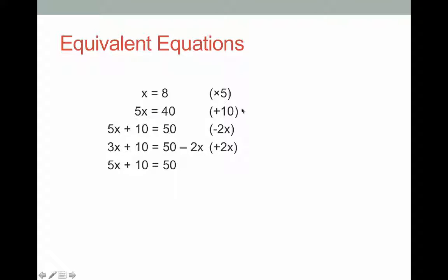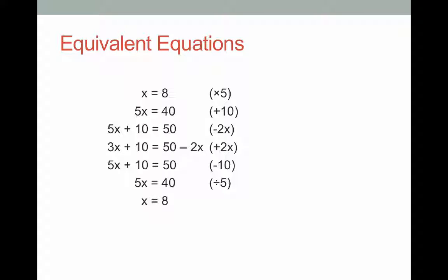Next up, I'm going to do the opposite of plus 10, which is to minus 10. So now I'm going to minus 10 from the left-hand side, which will just give me 5x. And I'm going to minus 10 from the right-hand side, which will give me 40. The final thing that I'll have to do is do the opposite of timesing by 5, which is dividing by 5. If I divide the left-hand side by 5, I get x. And divide the right-hand side by 5, I'll get 8.